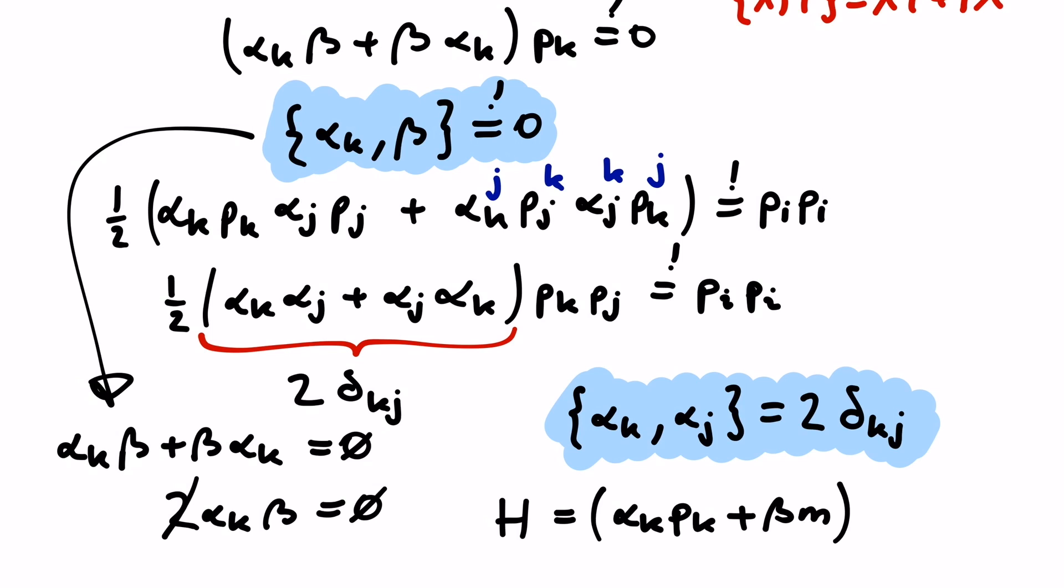And if alpha and beta are matrices, then the thing they're acting on, the wave function psi, also has to be a column vector instead of a scalar function. That's pretty much it. Thanks for watching, and see you next time.